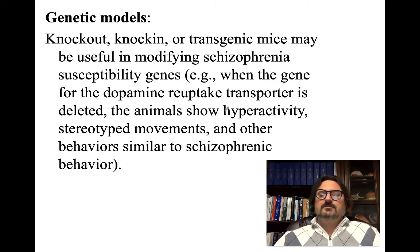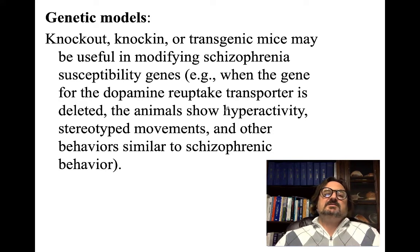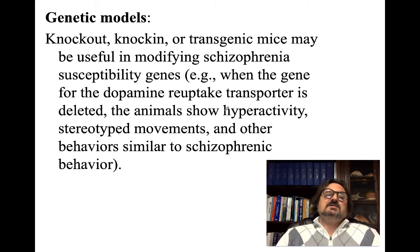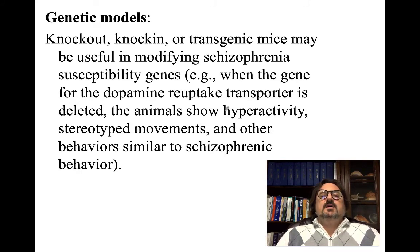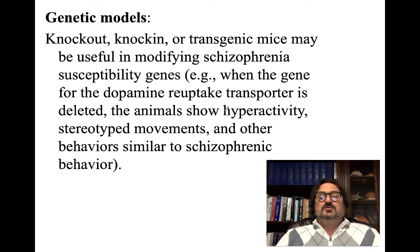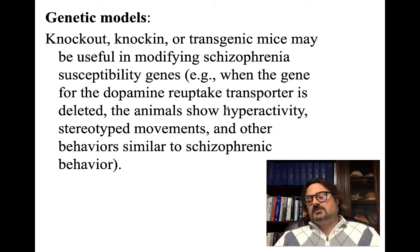Genetic models use knockout mice — where certain genetic sequences are knocked out — or knockin/transgenic mice to modify genes susceptible in schizophrenia. When the gene for the dopamine reuptake transporter is deleted, animals show hyperactivity, stereotyped movements, and other behaviors similar to schizophrenic behavior.